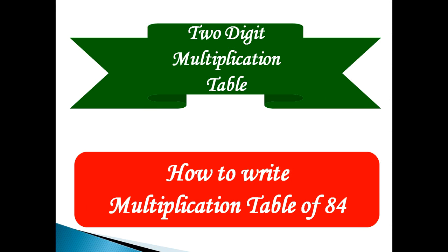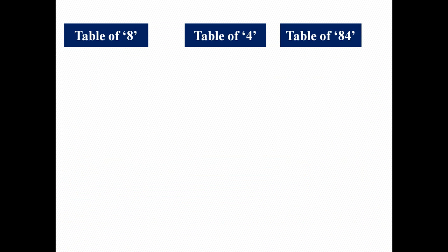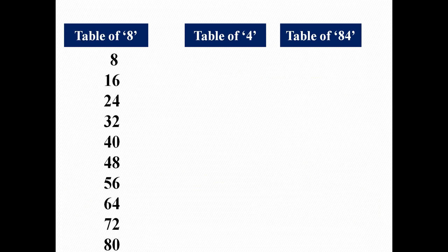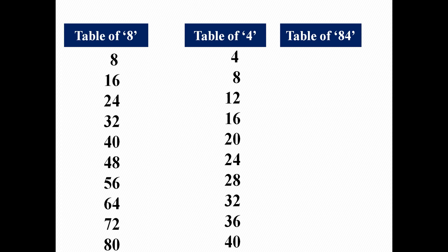There are 2 digits in 84, that is 8 and 4. Firstly, write the table of 8 here and then write the table of 4 here. Now observe the table of 4. If there is a single digit number, then we will write both digits as it is — that is 84. So we can say that 84 ones are 84.